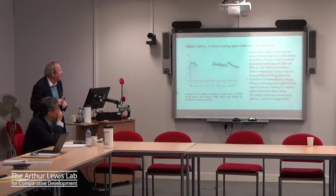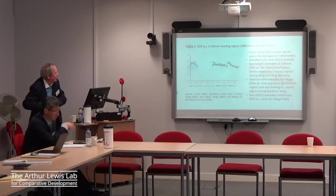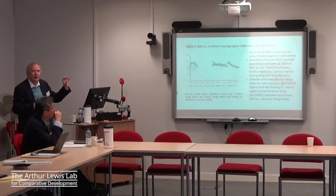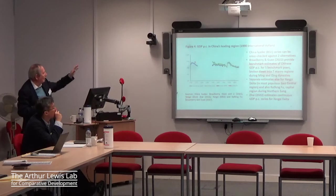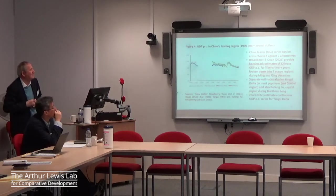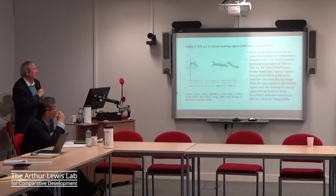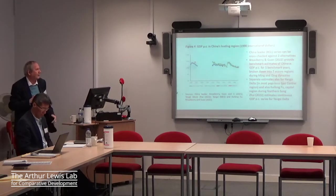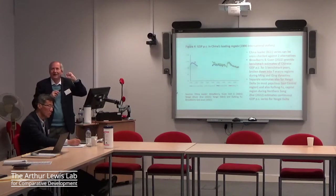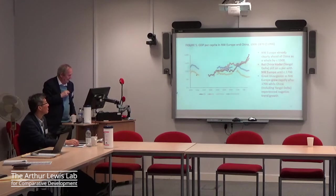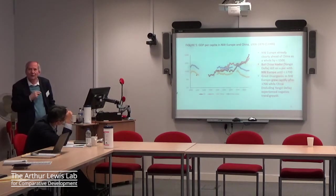The Yangtze Delta black dots track reasonably well the blue line. We also did a separate estimate for the capital region in northern China — that's a little bit higher. Probably more importantly is the green line, which comes from estimates of a continuous series for the Yangtze Delta. Basically, we're getting pretty much the same story across these different approaches.